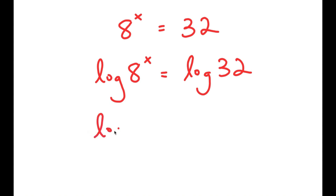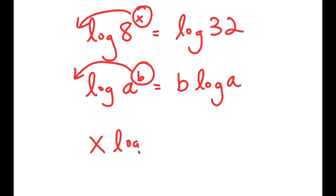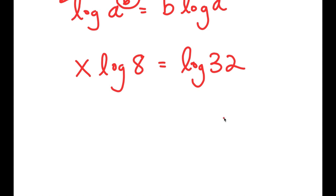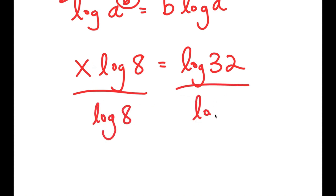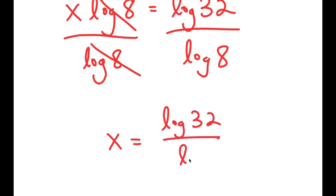If I have something in the form log of a to the power of b, I can move b to the front of the logarithm, so this turns into b times log a. So in the case of log 8 to the power of x, we can move x to the front. So I get x times log of 8 is equal to log of 32. From here, I'm going to divide both sides by log 8 to isolate x, and I get x is equal to log of 32 over log of 8.